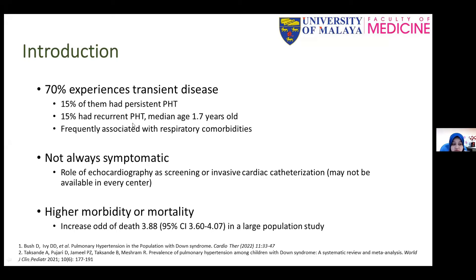In one moderately sized retrospective study, 70% of Down Syndrome patients with pulmonary hypertension had a transient disease with complete resolution. However, 15% had persistent pulmonary hypertension and another 15% had recurrent pulmonary hypertension — already resolved but recurred again. The median age of recurrence was one and a half years old. This group of patients is frequently associated with respiratory comorbidities, and pulmonary hypertension in Down Syndrome is not always symptomatic.